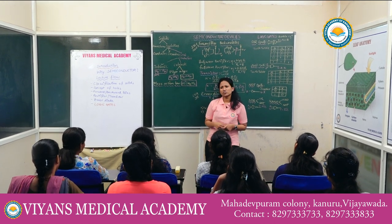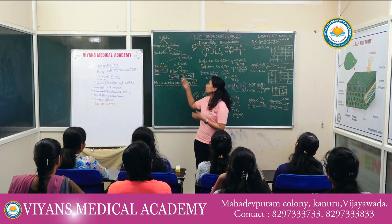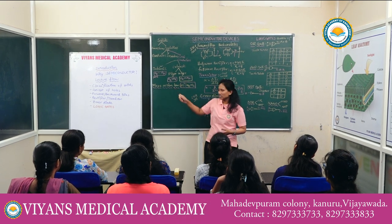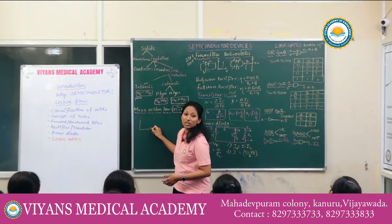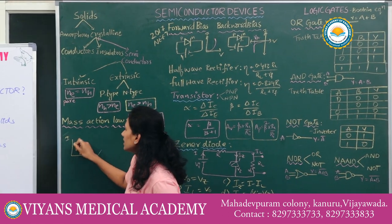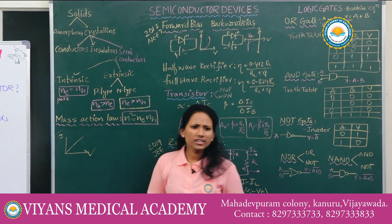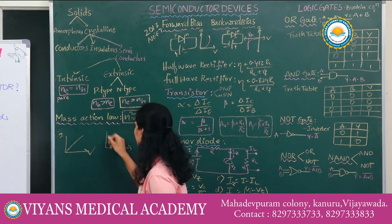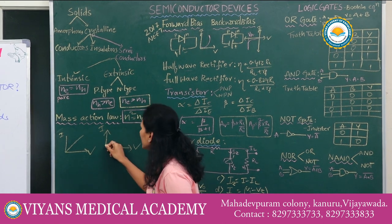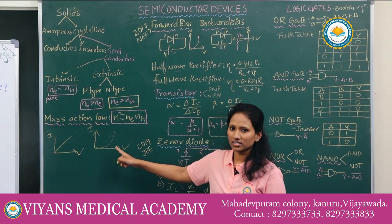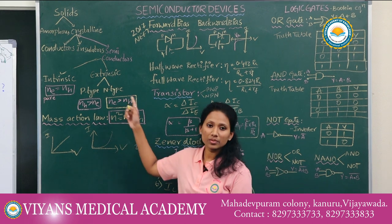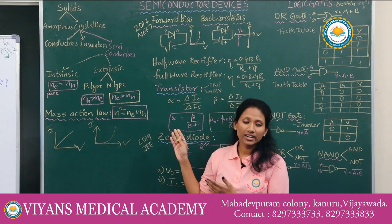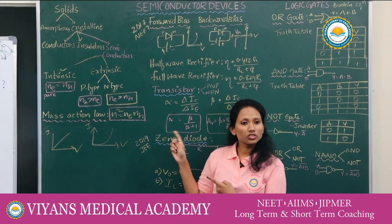Why are we using semiconductors when we have conductors for passing electricity? If we use conductors, the current will keep on increasing as we increase the potential, which is not always necessary. In case of semiconductors, the current versus potential graph increases in a particular fashion — it increases linearly in a controlled way. So semiconductors are very importantly used as electronic devices.